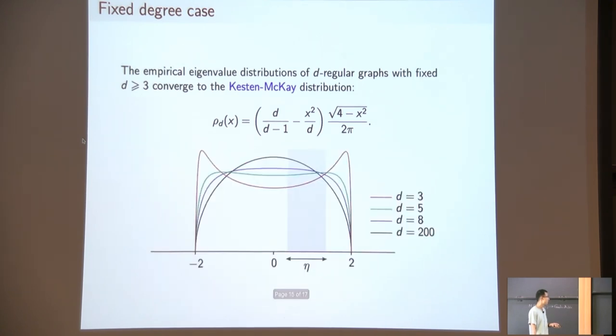Here are some more plots of the Kesten-McKay distribution. Here's d equals 3, d equals 5, d equals 8, and d equals 200. As you can see, if d gets bigger and bigger, this quantity converges to 1, and so the Kesten-McKay distribution converges to the semicircle distribution.